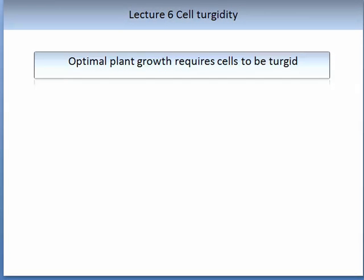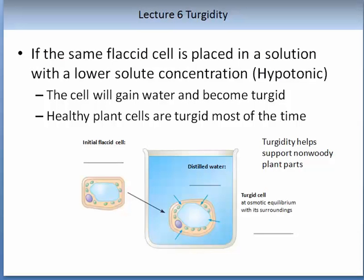Optimal plant growth requires cells to be turgid. Turgidity refers to how much water cells contain. For example, if a flaccid cell is placed in a solution with a low solute concentration, it is said to be hypotonic — the cell will gain water and become turgid. Healthy plants are turgid most of the time and certainly for optimal growth, turgid cells is something to aim for. A flaccid cell placed in water gains water via osmosis through the cell membrane and becomes turgid.